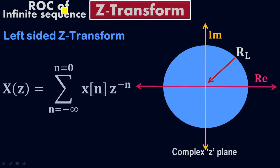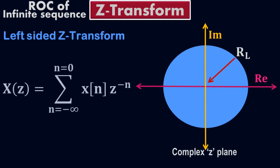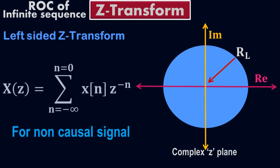The region of convergence for the left-sided Z-transform exists for the minimum value of the left-side radius, R sub L. It should be a minimum value because we are decaying toward the center, so R should be minimum. Remember, the region of convergence for the left-sided Z-transform corresponds to the non-causal signal.